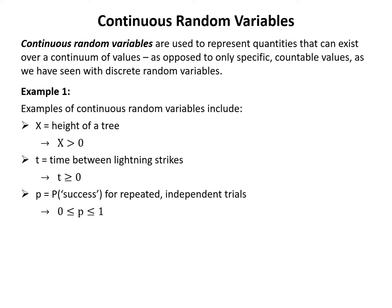Continuous random variables are used to represent quantities that can exist over a continuum of values, as opposed to only specific countable values as we have seen with discrete random variables. In Example 1 we see some examples. The first is x equals the height of a tree, which could be any value greater than zero with no specific upper limit.